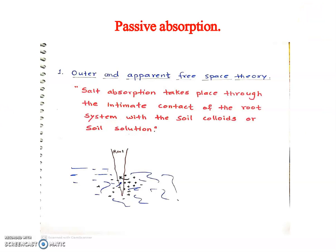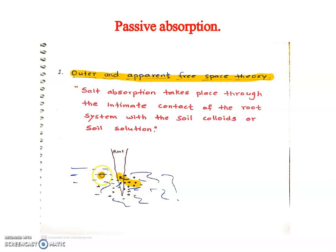The outer and apparent free space theory says that salt absorption takes place through the intimate contact of the root system with the soil colloids or soil solution. In the soil, there is capillary water and in that water there are dissolved salts. When there are more concentrated salts in the soil water, these salts are absorbed by diffusion into the root. This way the salt enters into the roots, called the outer and apparent free space theory.